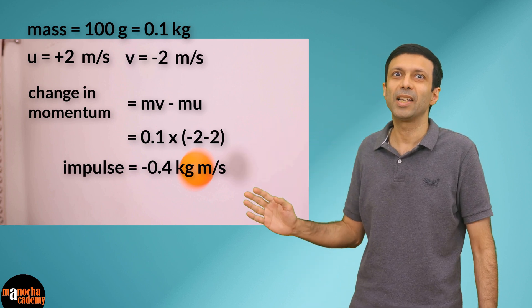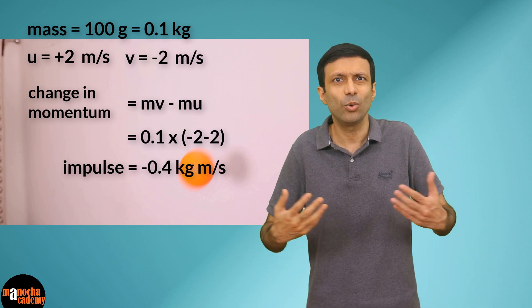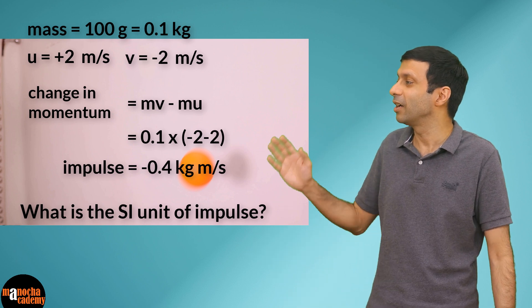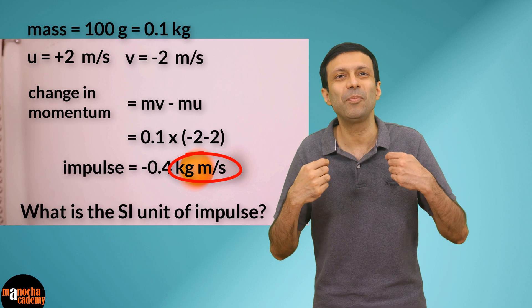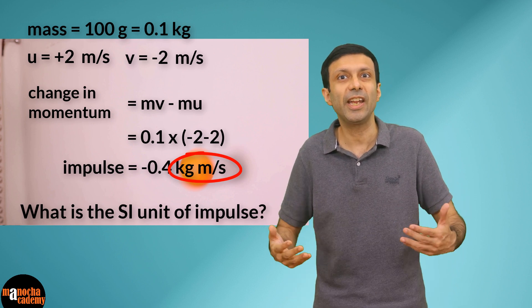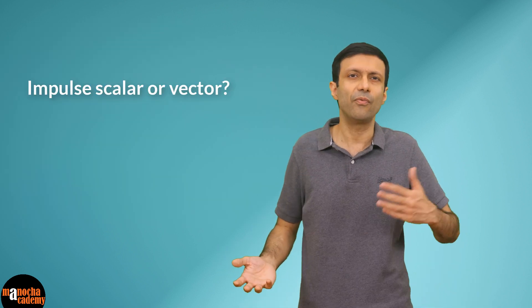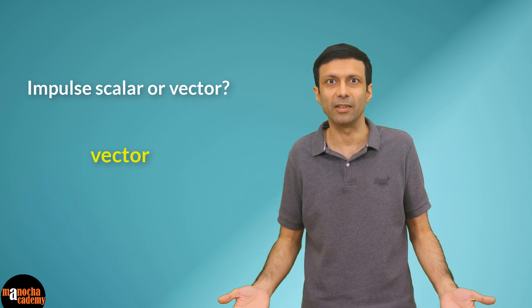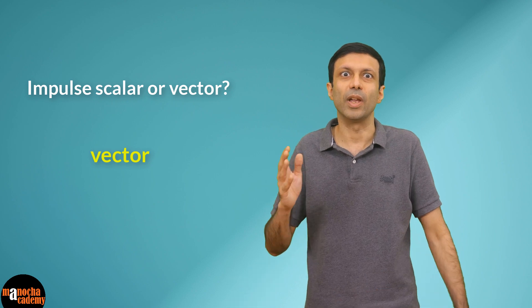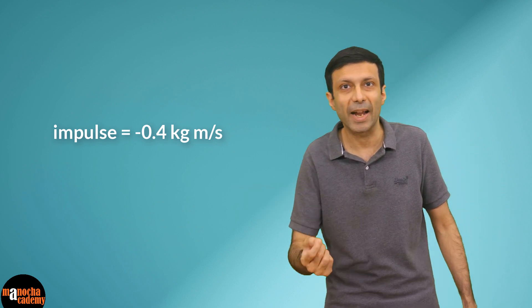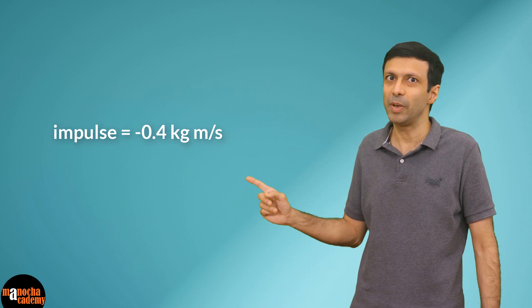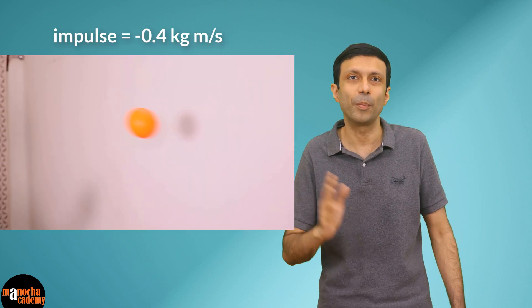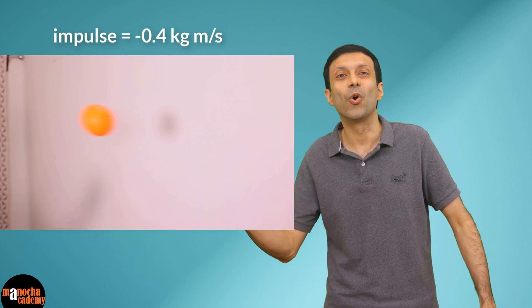What is the SI unit of impulse? From our calculation, the unit is kg·m/s — the same as the unit of momentum, since impulse equals change in momentum. Is impulse a scalar or a vector quantity? It is a vector quantity, since momentum and change in momentum are also vectors. Impulse has the same direction as the velocity. Here, the impulse is −0.4 kg·m/s: the magnitude is 0.4 kg·m/s and the negative sign indicates the force is in the opposite direction to the initial motion.